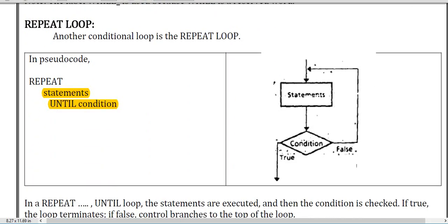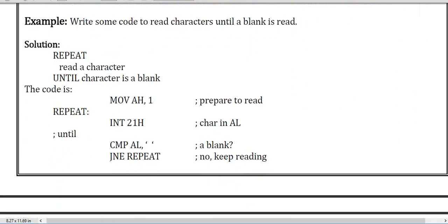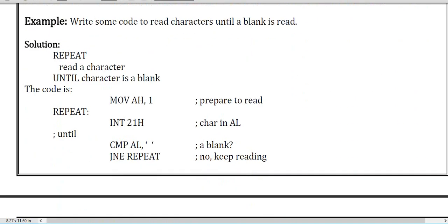Then the repeat loop section: in the repeat loop we have statements first, and then the until condition. We do the work until the condition becomes false — we do the task, go to the condition, if it is false go back to the statement, and if it becomes true we leave and go forward. That is how the repeat loop works with the until condition.